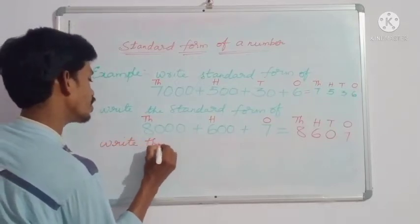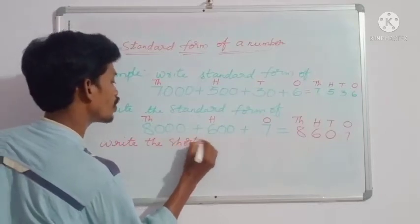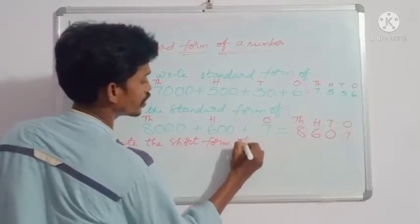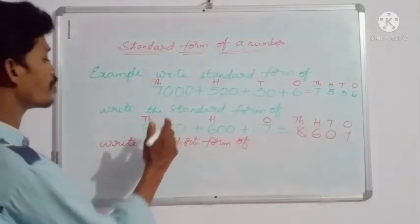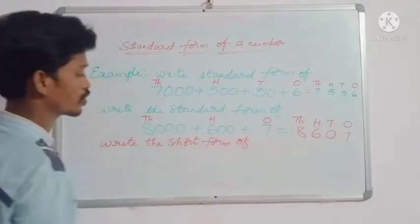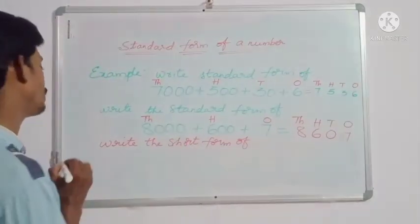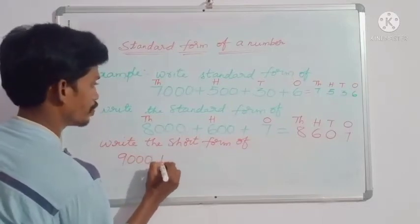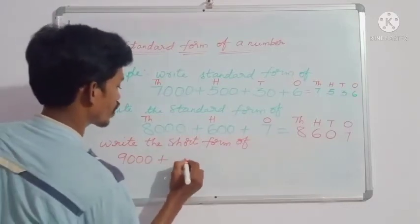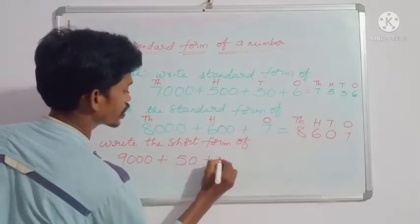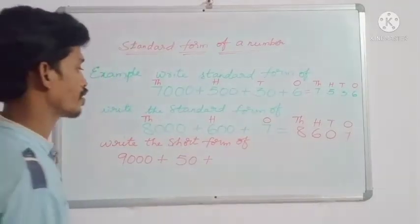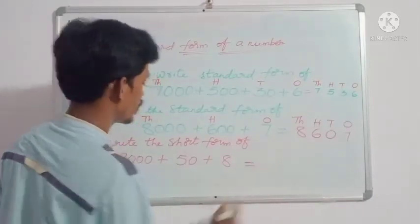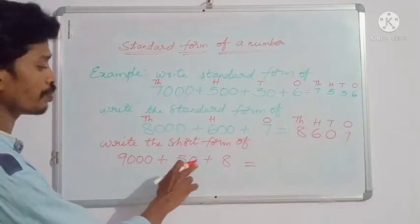Write the short form of a number — you can say standard form as short form also. The number is 9000 plus 50 plus 8.